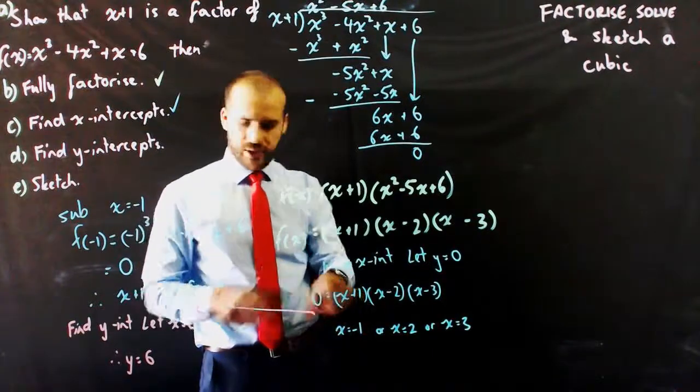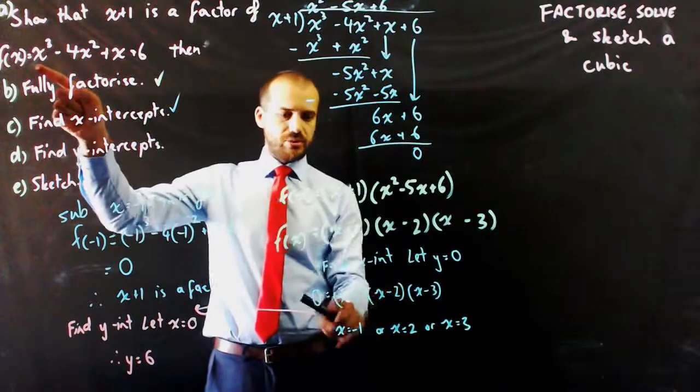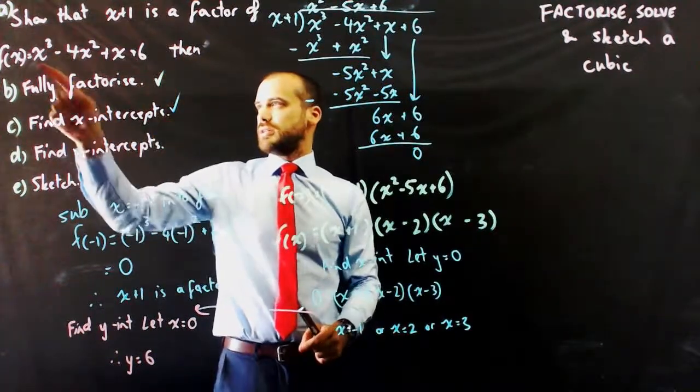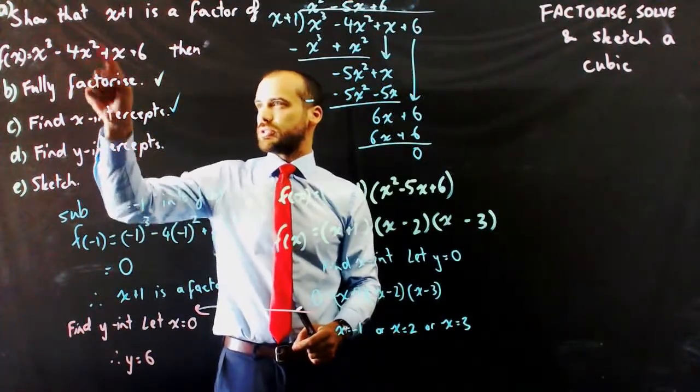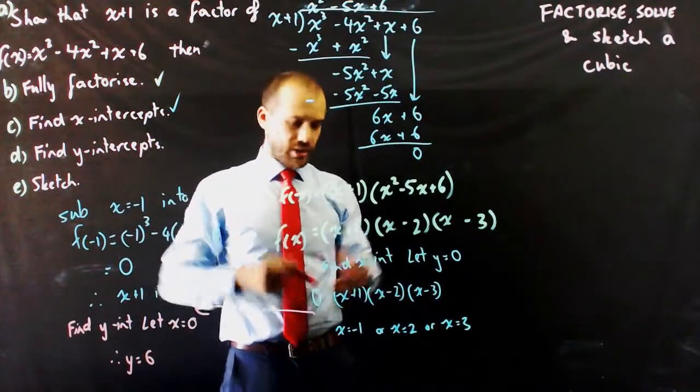You can put it in there and it works. It gives you y equals 6. You could also just put it into here, because remember that's the same as that. 0 cubed minus 4 times 0 squared plus 0 plus 6. The y intercept is 6. Alright. Finally, I can pretty much sketch this now.